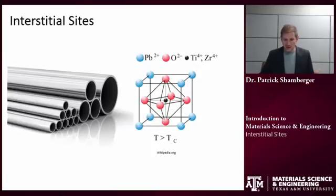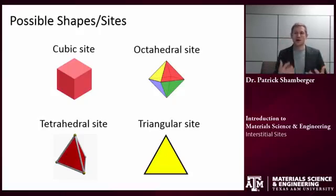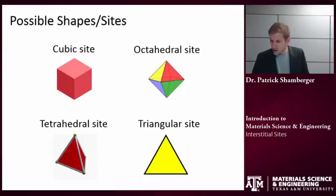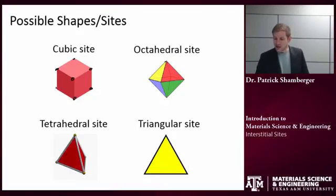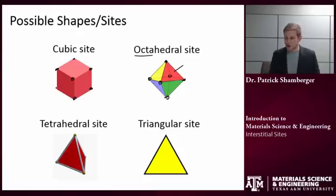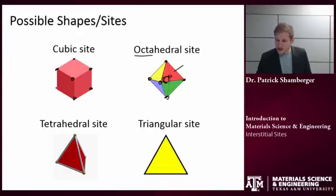The first thing that I need to think about when I am talking about interstitial sites is, what are the possible shapes or sites that I should think about? There are four basic ones I want you to know. These are the cubic site. If I think about a cube with a hard spherical atom at each of the corners, there is going to be a hole in the very center of that cube. That is the cubic site. Same thing with an octahedral site. Octa means eight. There are eight faces on an octahedron.